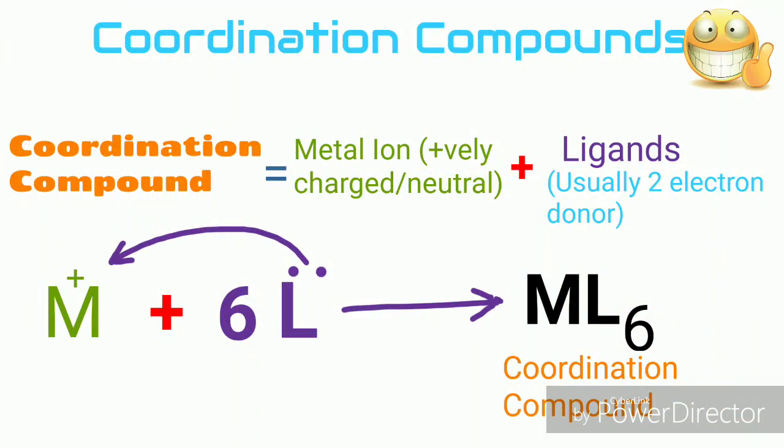Coordination compounds are formed by positively charged metal ions and in some cases neutral metal with Lewis bases called ligands. One ligand usually donates two electrons.